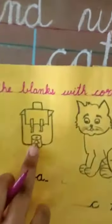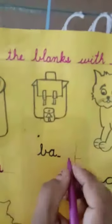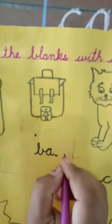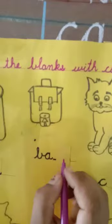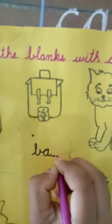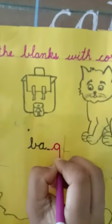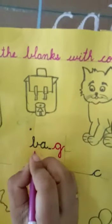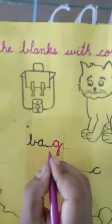Now, this one is bag. Bag. Last sound is G. So, what comes here? Which letter comes here? G. G means g. G says g. B-A-G. Bag.